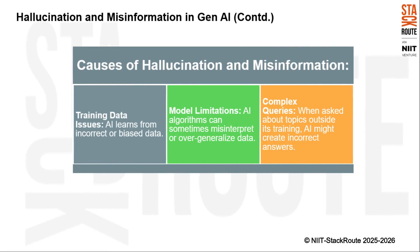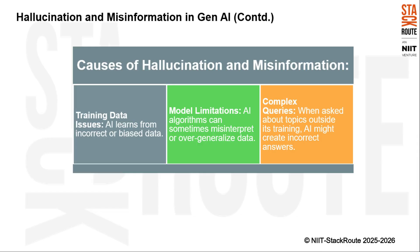The causes of hallucination and misinformation include: training data issues — if the training data contains errors or biases, the AI will inevitably learn and reproduce those mistakes, much like being taught incorrect facts during education; and model limitations — AI algorithms, while powerful, are not infallible. Sometimes these algorithms misinterpret the data they process or overgeneralize from specific examples, meaning that even if the data is correct, the AI might still make mistakes in understanding or applying that data to new situations.